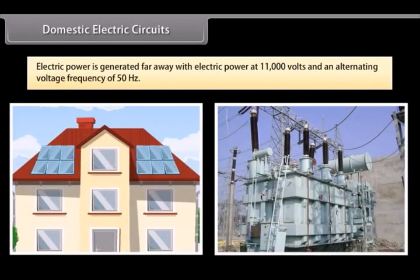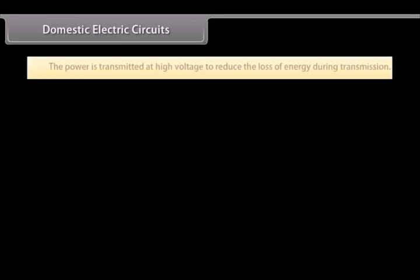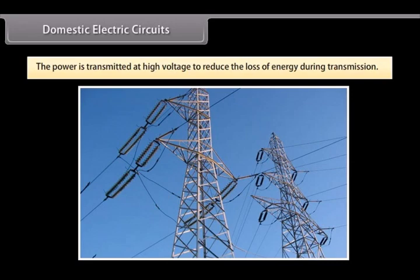Domestic electrical circuits. Electric power is generated far away from the places it is consumed. At the generating station, the electric power is generated at 11,000 volts with an alternating voltage frequency of 50 hertz. The power is transmitted to the places of consumption at high voltage to reduce the loss of energy during transmission.